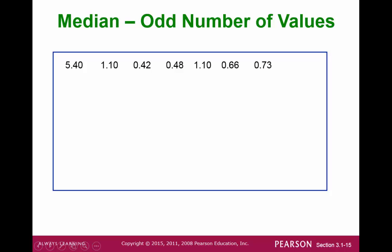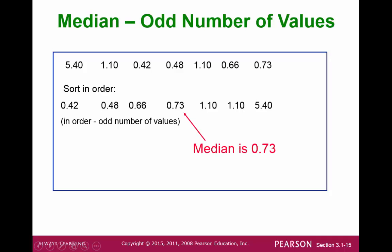Let's take a look at an example. Consider this set of numbers. The first thing we want to do is to sort them in order. With seven numbers, we look at the middle value. That's the fourth number. So, our median is 0.73.